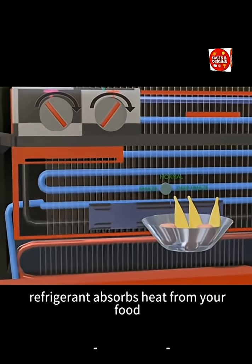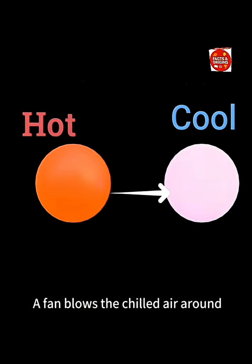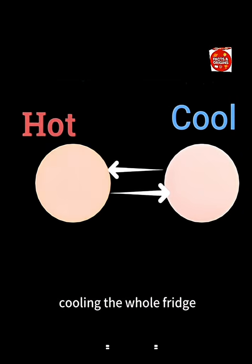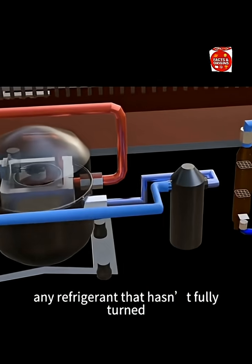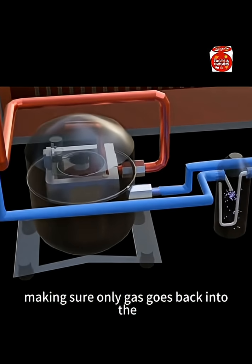The refrigerant absorbs heat from your food, turning back into gas. A fan blows the chilled air around, cooling the whole fridge. Finally, any refrigerant that hasn't fully turned into gas passes through an accumulator, making sure only gas goes back into the compressor.